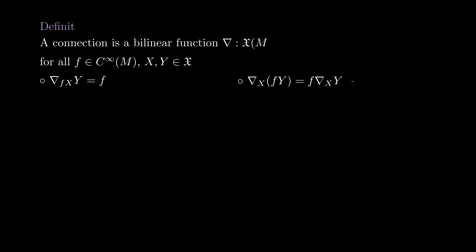In a smooth manifold, a connection is a bilinear function we denote by Nabla that takes two vector fields and returns another vector field. For Nabla to be a connection it needs to be C-infinity of M linear on the first coordinate, and it needs to satisfy the Leibniz property on the second coordinate. We should interpret Nabla as the derivative of the vector field Y in the direction of X.